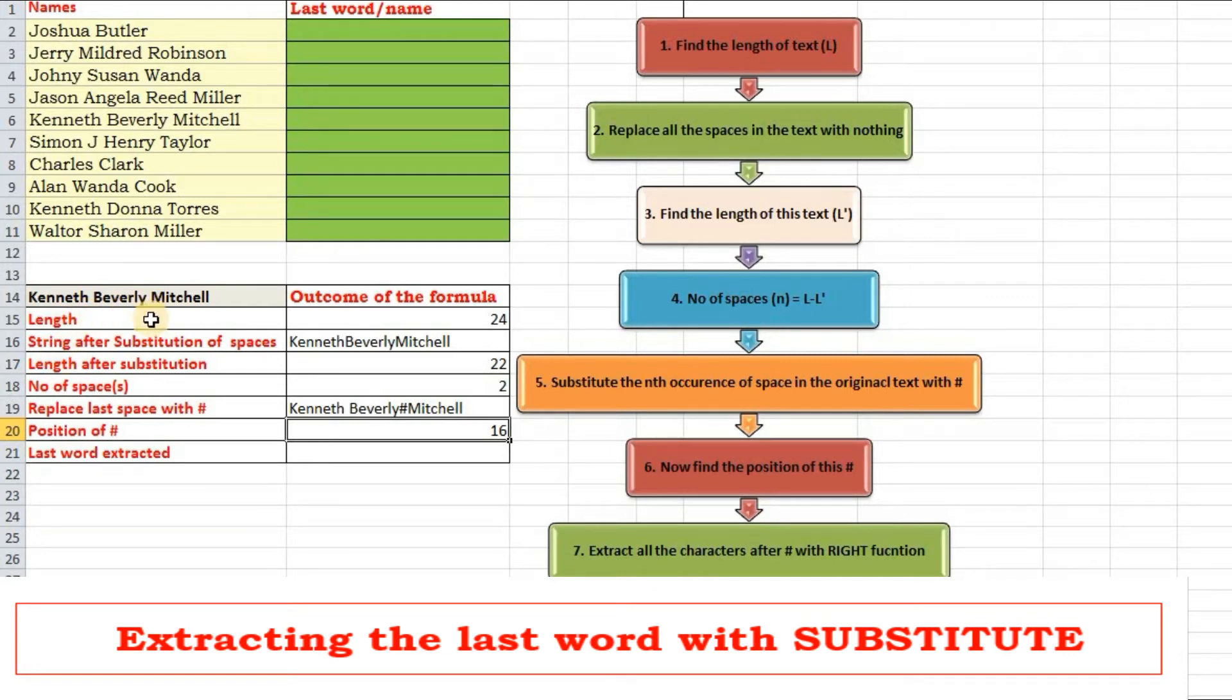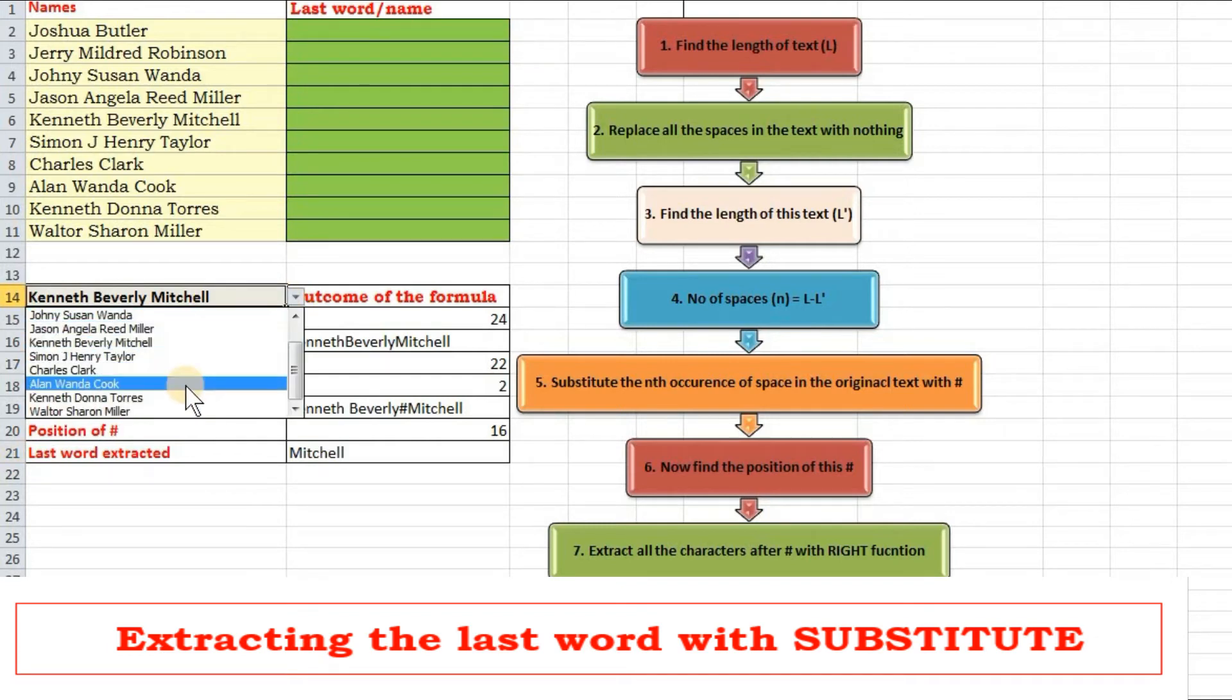Now we will extract with the help of right function, this number of characters, 24 minus the position of the last space. Now I can show you if I change the name, you can see it is extracting the last word.